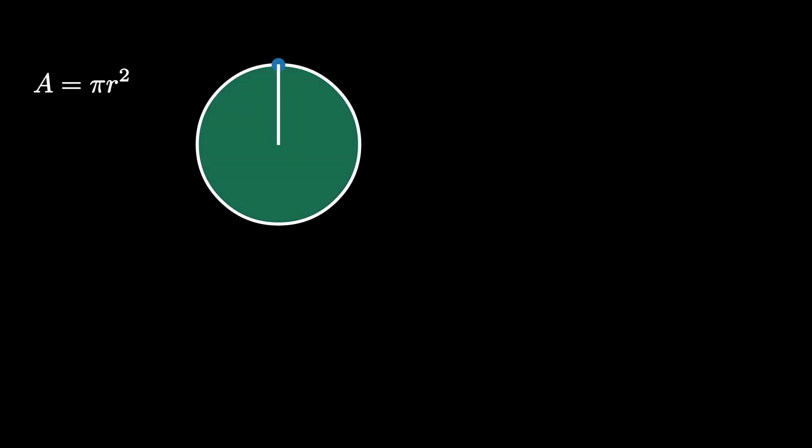Suppose we are given a circle with radius r, so that its area is A equals pi r squared.